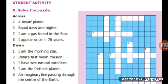Next, solve the puzzle. First, fill across the puzzle. A dwarf planet: Ceres. Next, equal days and nights: Equinox, spelling E-Q-U-I-N-O-X. Next, I am a gas found in the sun: Hydrogen. Next, I appear once in 76 years: Halley's comet.